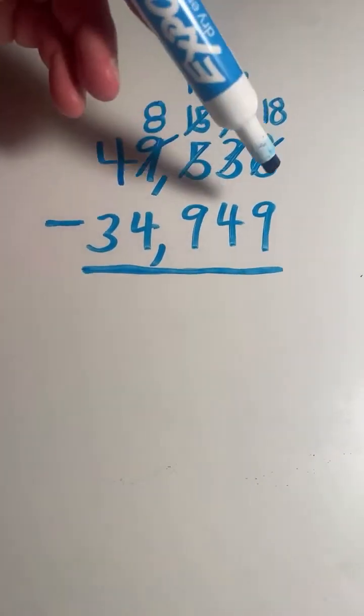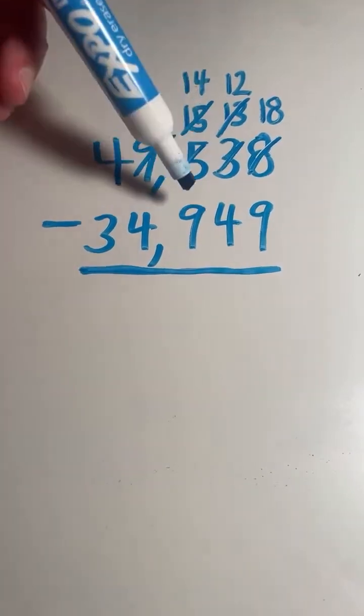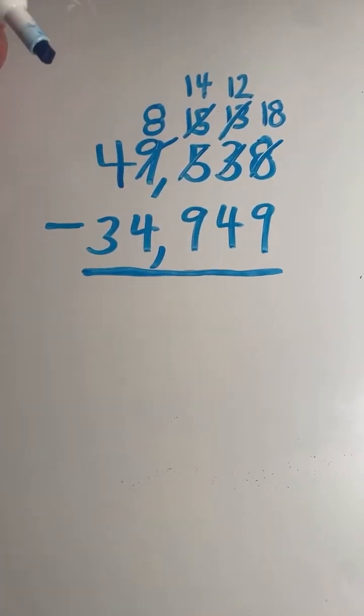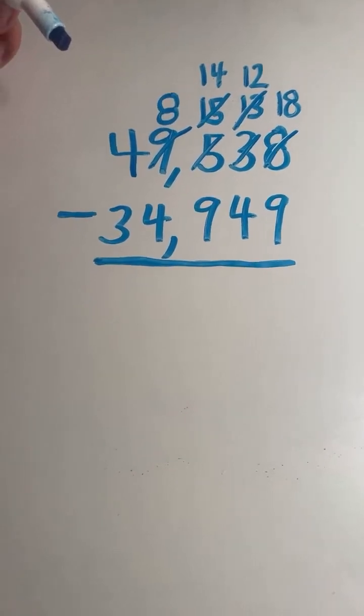So 18 is greater than 9, 12 is greater than 4, 14 is greater than 9, 8 is greater than 4, 4 is greater than 3. All the top digits are bigger, and we are ready to subtract.